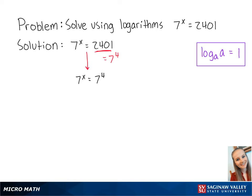Using the following property, we're going to want to use the log of base 7. So this becomes log base 7 of 7 to the x equals log base 7 of 7 to the 4th power.